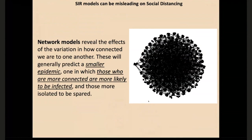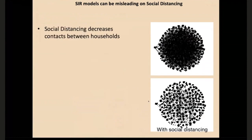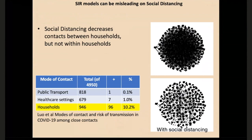Network models will also tell you that those more likely to get infected are those who are more connected. Network models are also helpful for thinking about social distancing. I imagine we were acting a month or two ago in small household or family clusters, but going out and connecting with lots of other clusters. Now, at least in Philadelphia and much of the globe, we're in tight household clusters sequestered away, but many of us are still making contact with others. Social distancing can decrease contacts between households, but it can't do anything about contacts within households. And this is a critical point.